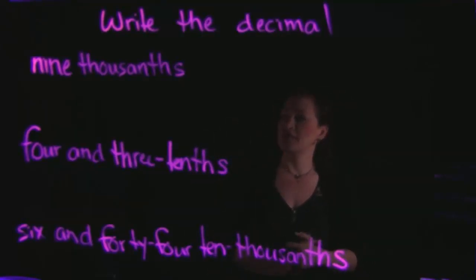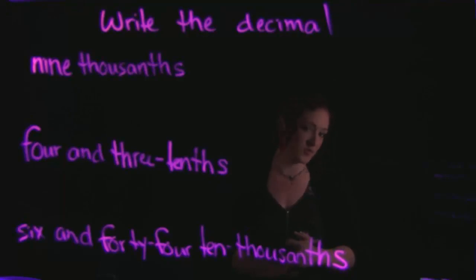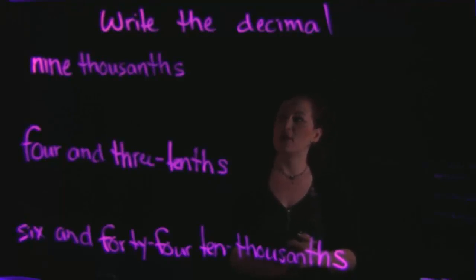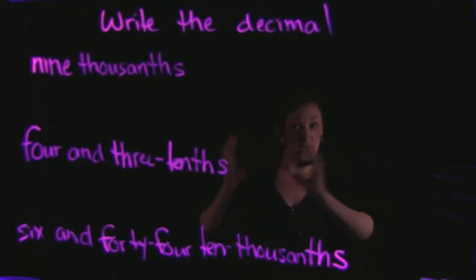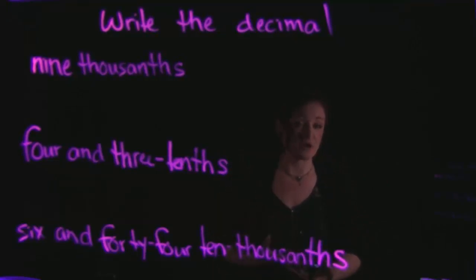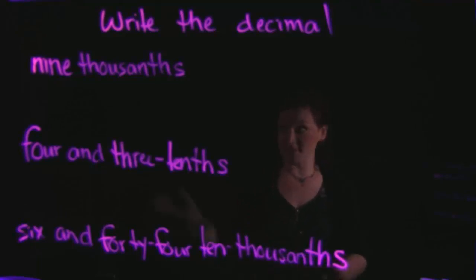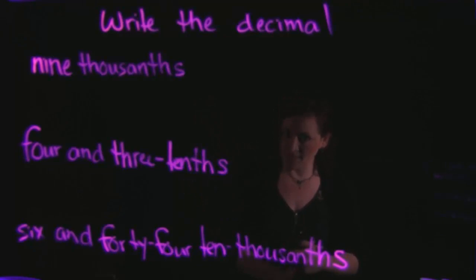The first example that we have is nine thousandths. When it comes to the word name of a decimal, there are typically three components that you look at: the number that goes to the left of the decimal — your tens, hundreds, thousands place values and so on. If you have the word AND in your word name, that represents your decimal point, followed by the number that you have to the right of the decimal.